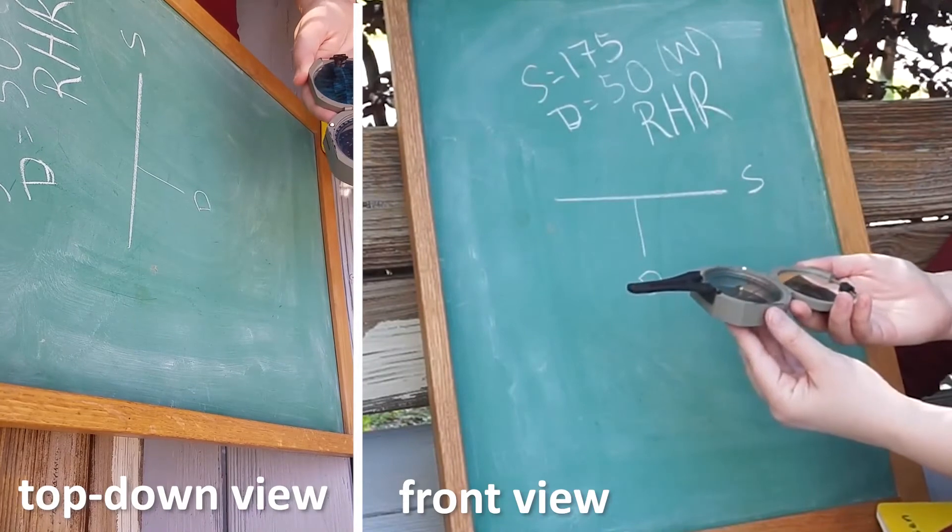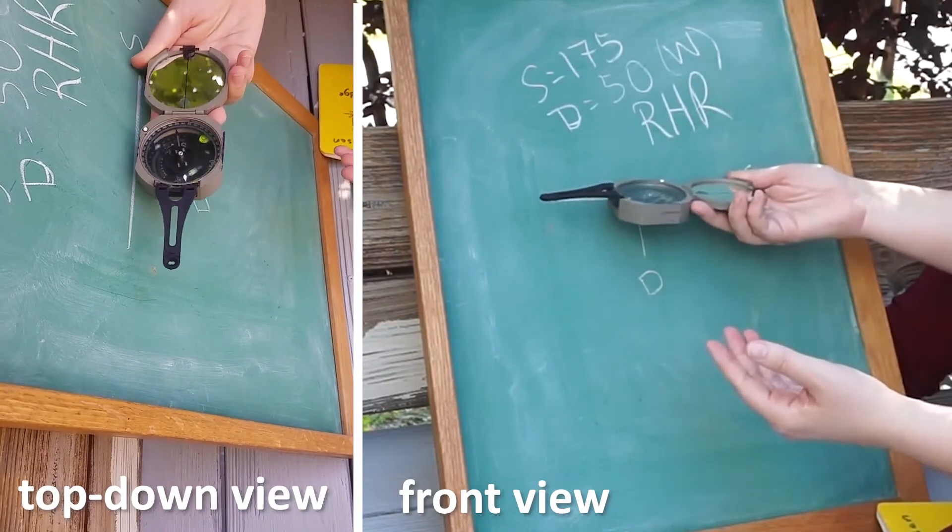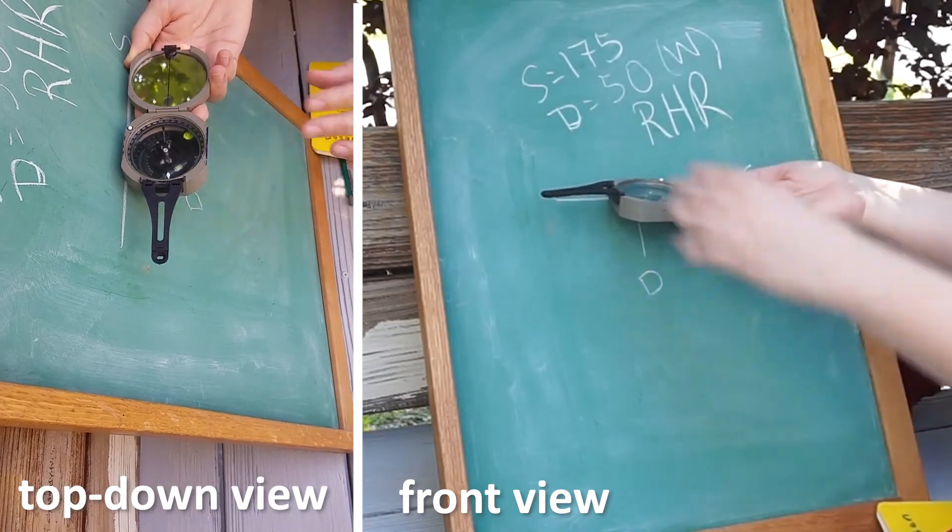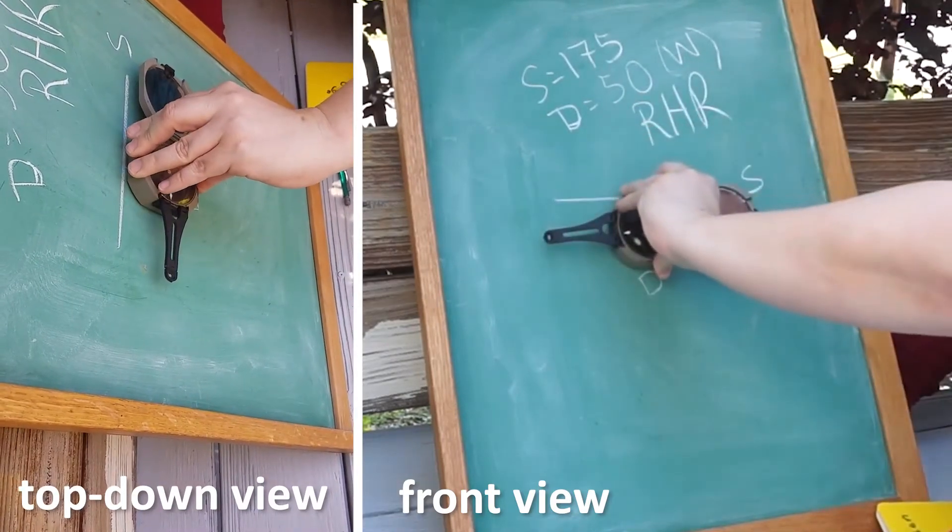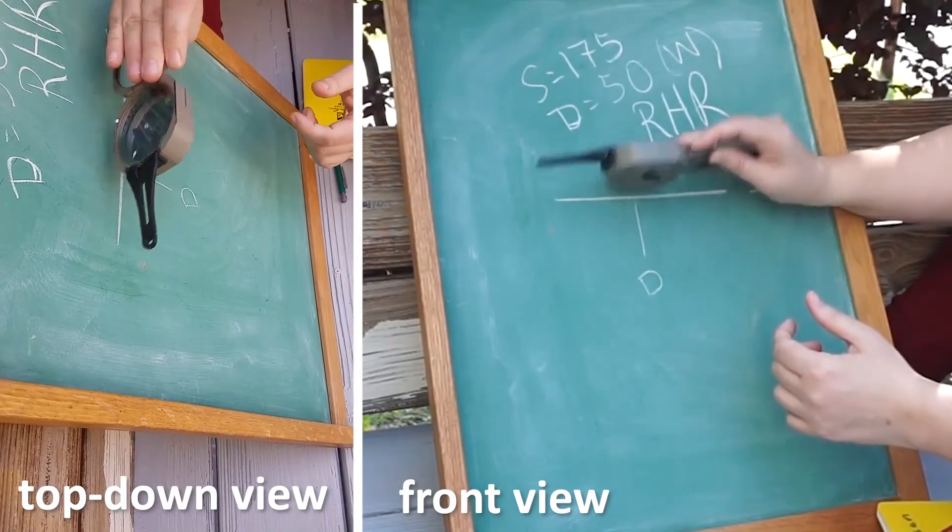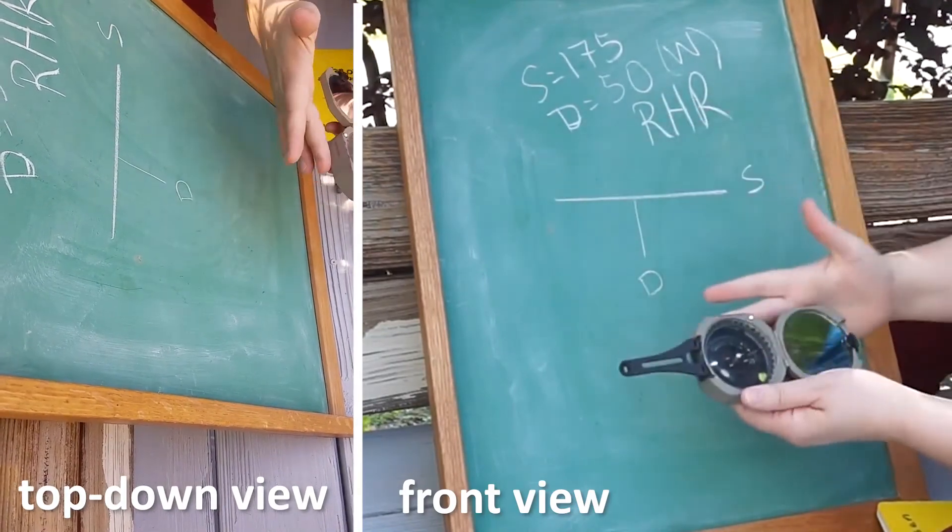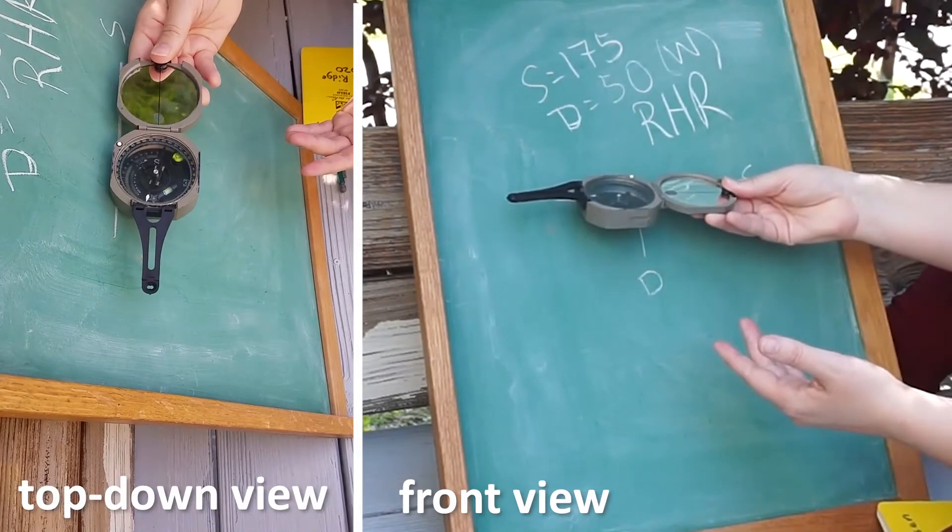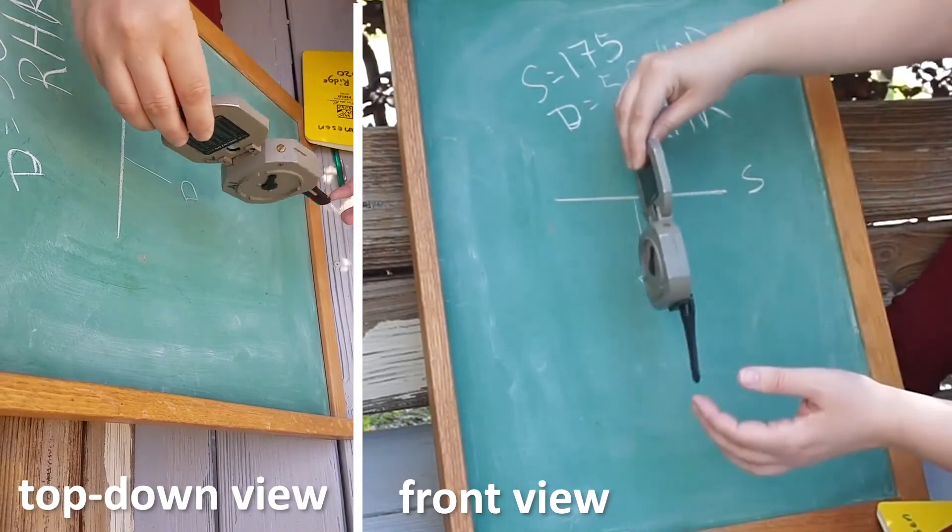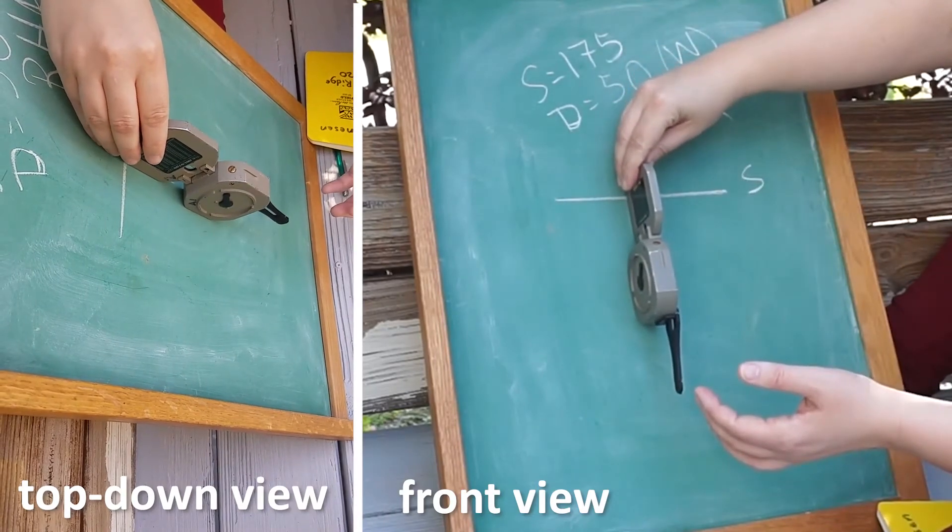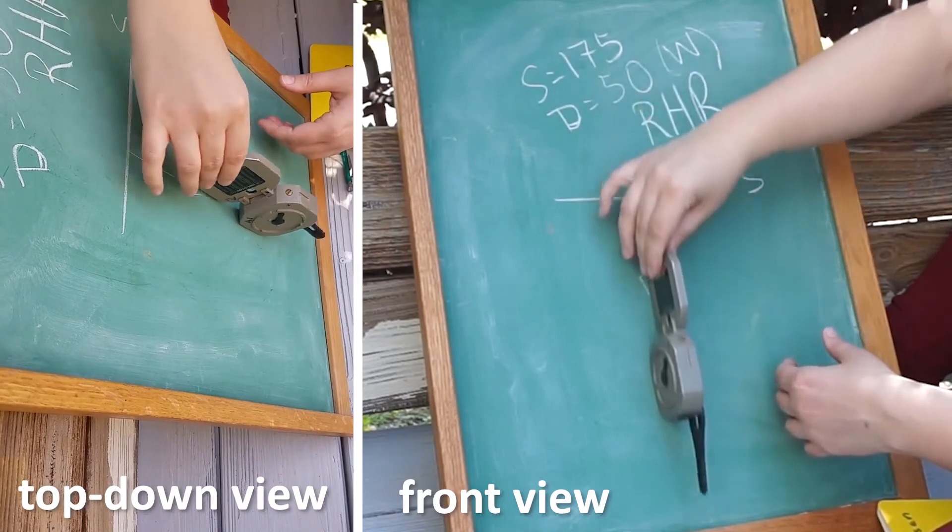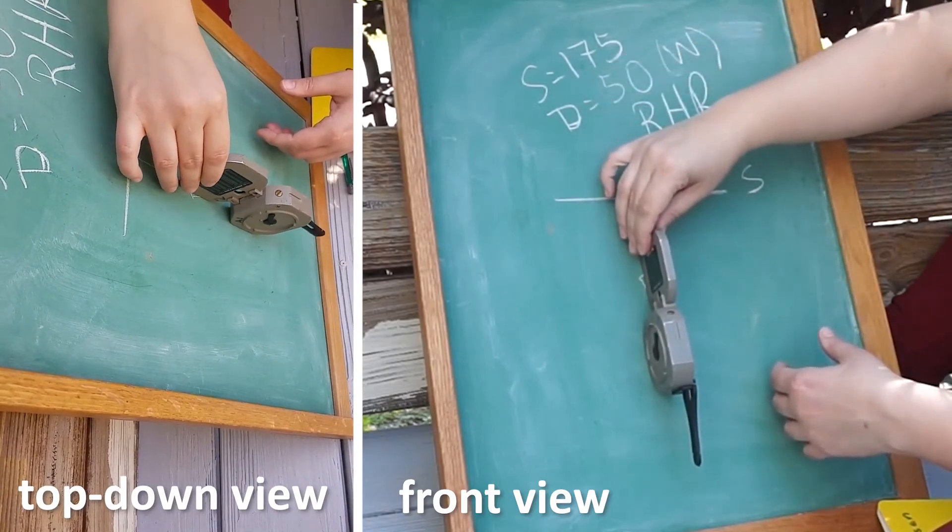So that's basically how you use the Brunton. You want to remember that when you're measuring strike, you have to hold the Brunton horizontal. It doesn't work if you lay it on the surface, it doesn't work if you hit it perpendicular to the surface - only this bottom edge is going to touch that surface, and you want to get it nice and parallel. When you're doing dip, the whole side is on the surface and it has to be straight down perpendicular to your strike, the steepest angle you can get on that surface.